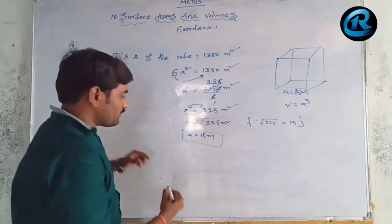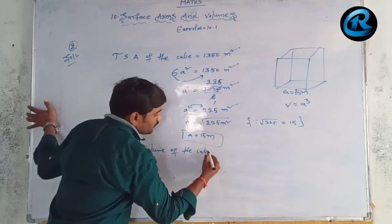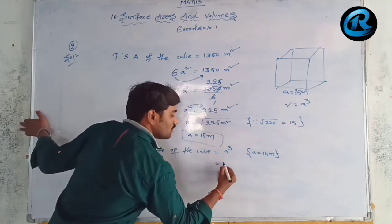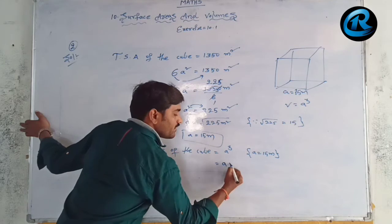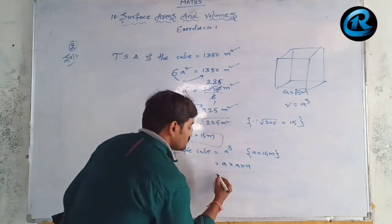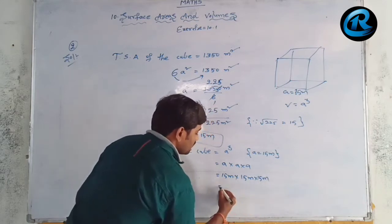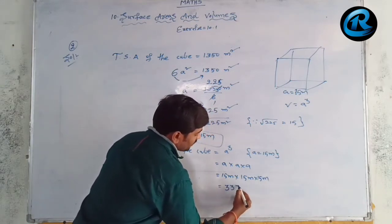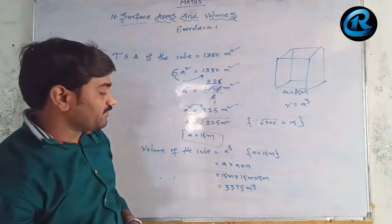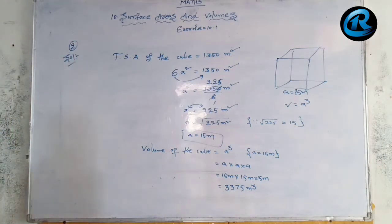Now we can find the volume of the cube. Volume = a³ = a × a × a = 15 × 15 × 15 = 3375 cubic meters. This is the volume of the cube. Please go through this solution and take a screenshot.